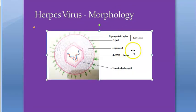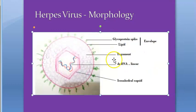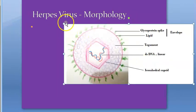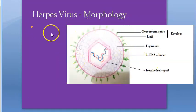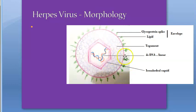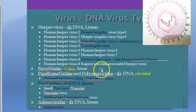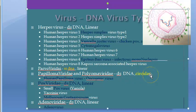Now let's look at the morphology of herpes virus. It is spherical with icosahedral symmetry and it is a DNA virus with double-stranded linear DNA. The only exception with circular DNA is papilloma virus, which has circular double-stranded DNA. Parvo virus has single-stranded DNA. Otherwise, all DNA viruses have double-stranded linear DNA.